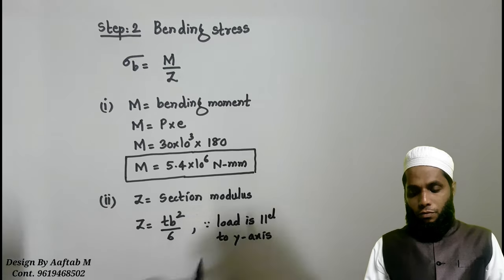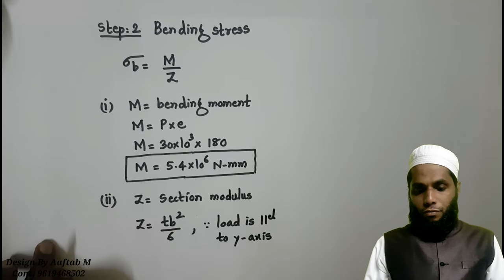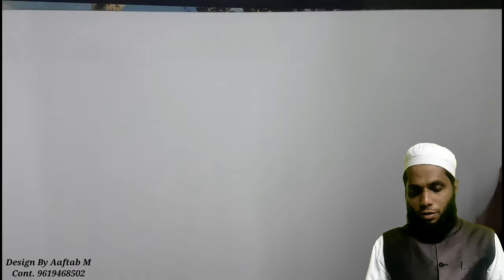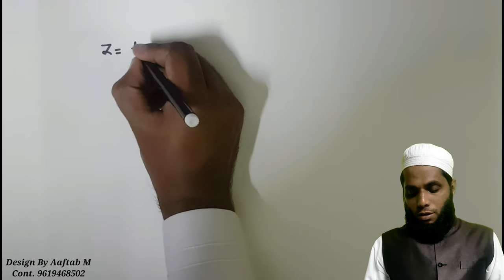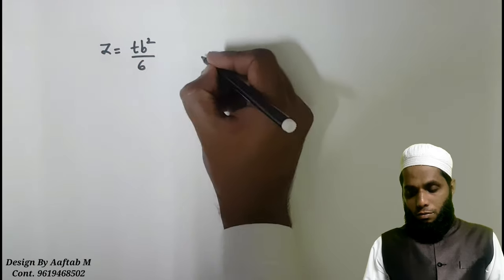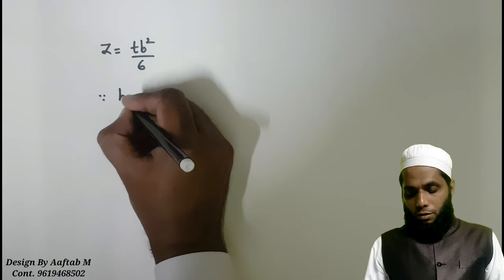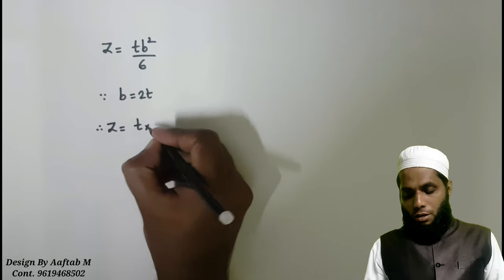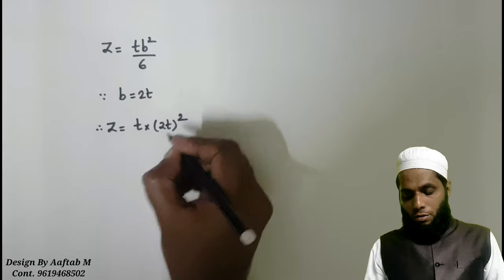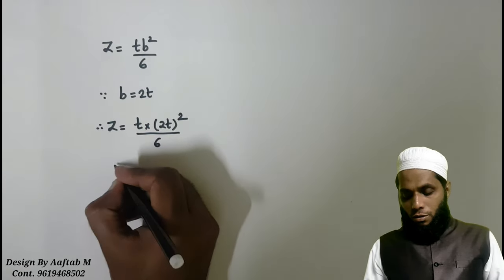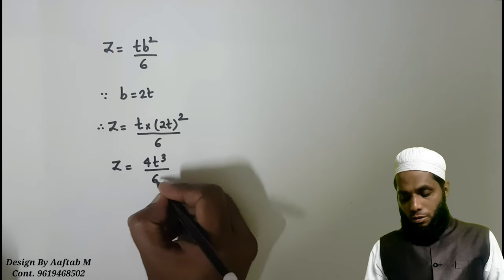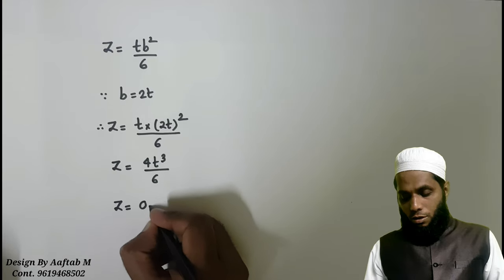This section modulus for rectangular cross section is TB square by 6 since load is parallel to Y axis. Now, we will find the value of bending stress sigma B by substituting Z equals TB square by 6. Since B is 2T, Z is equal to T into 2 times T whole bracket square by 6. Therefore, Z equals 4T cube by 6. So, Z equals 0.667 into T cube.